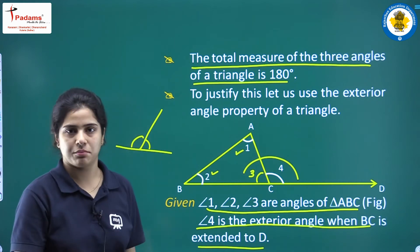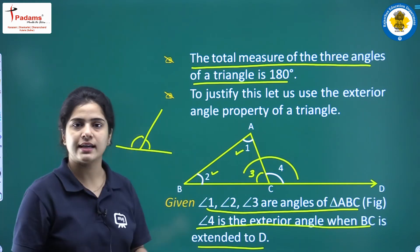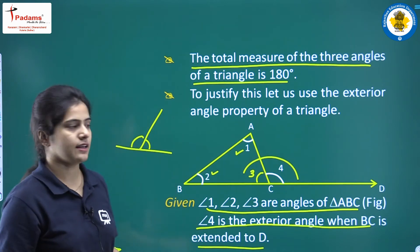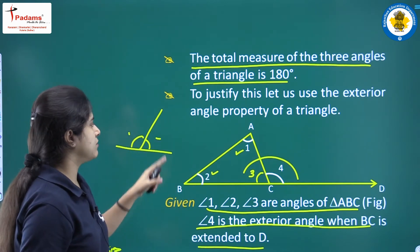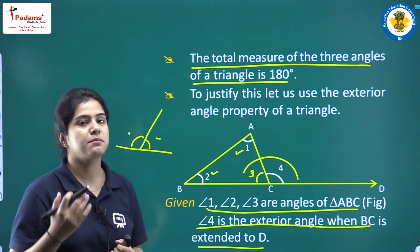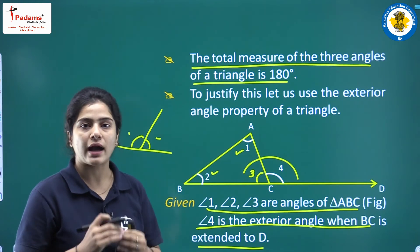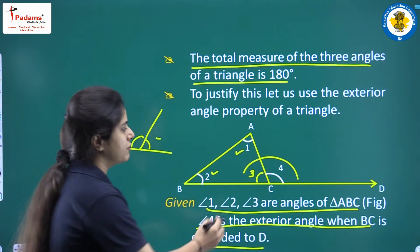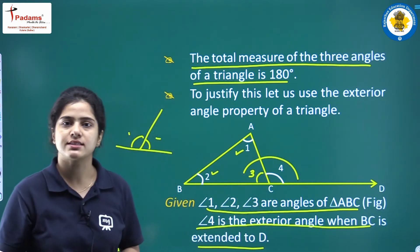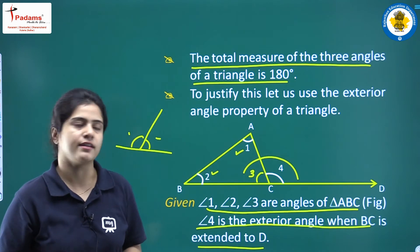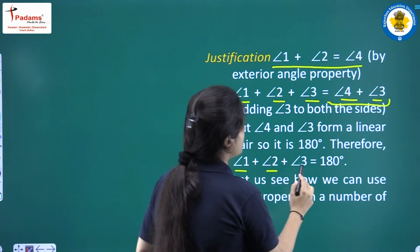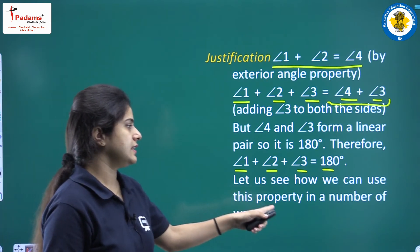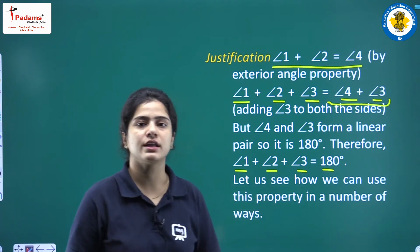Angles 3 and 4 are on a straight line, so they form a linear pair, and the sum of these two angles is 180 degrees. Therefore, angle 4 plus angle 3 equals 180 degrees, which means angle 1 plus angle 2 plus angle 3 equals 180 degrees.